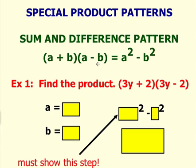When you follow this particular pattern, the answer when you distribute or FOIL or multiply these two binomials together, it is a squared minus b squared.